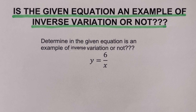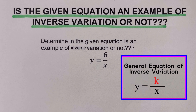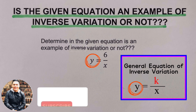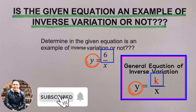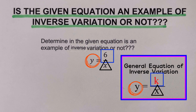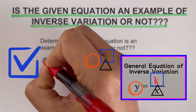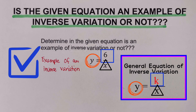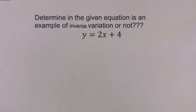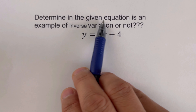Okay, so let's go over this first example: determine if the given equation is an example of an inverse variation or not. We remember that the general equation for inverse variation is y equals k over x. In this example, y is isolated by itself, which is good. We have a 6 that matches up to our k, and x is in the denominator under the 6. So we can say that this is an example of an inverse variation.